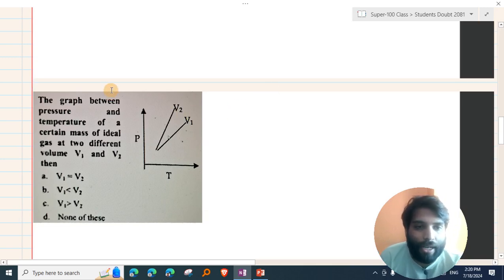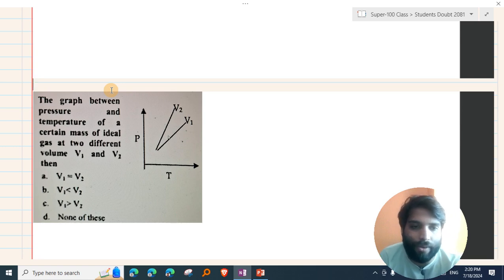The graph between pressure and temperature of a certain mass of ideal gas at two different volumes, V1 and V2.